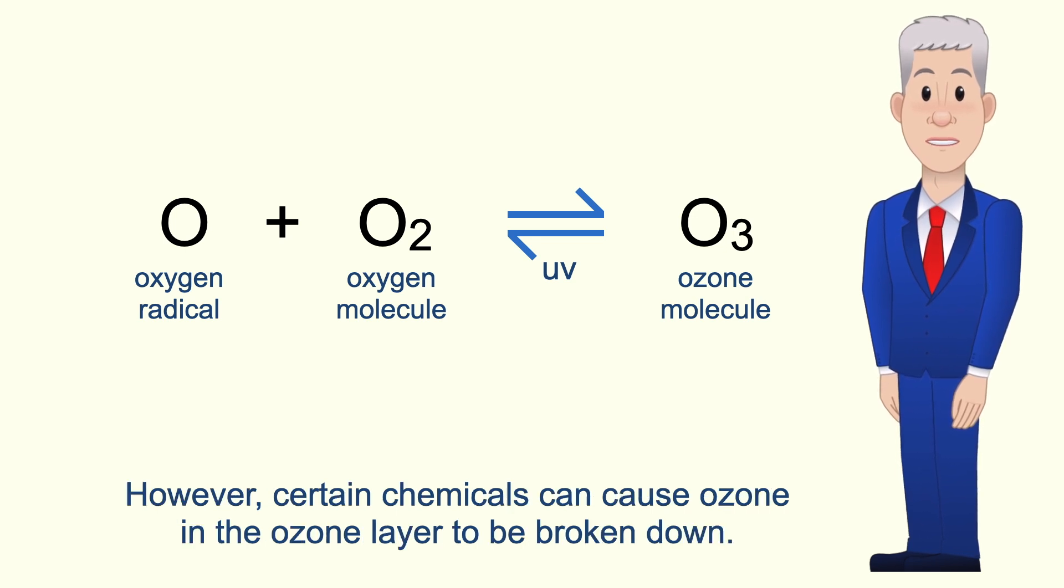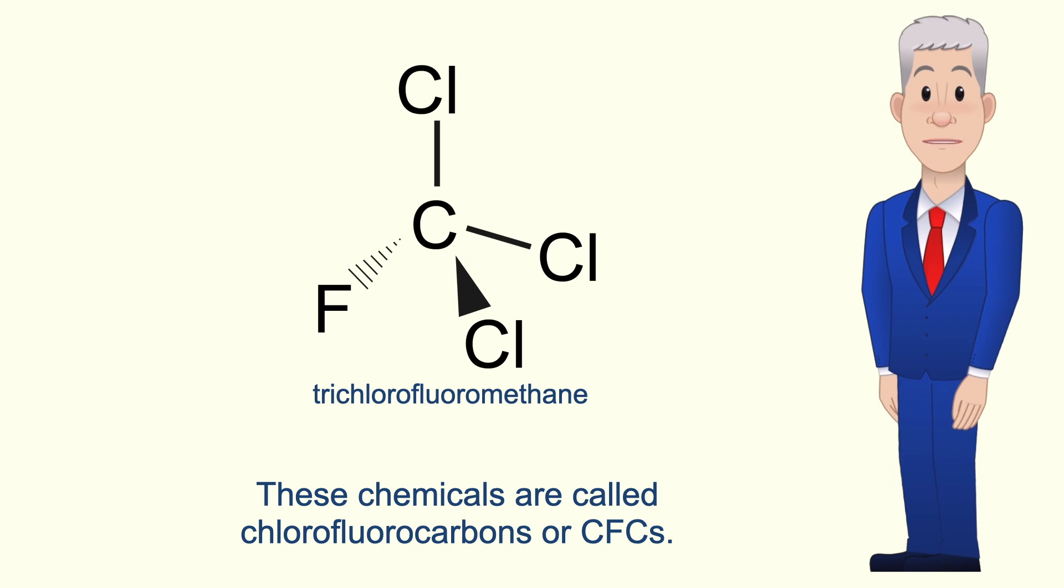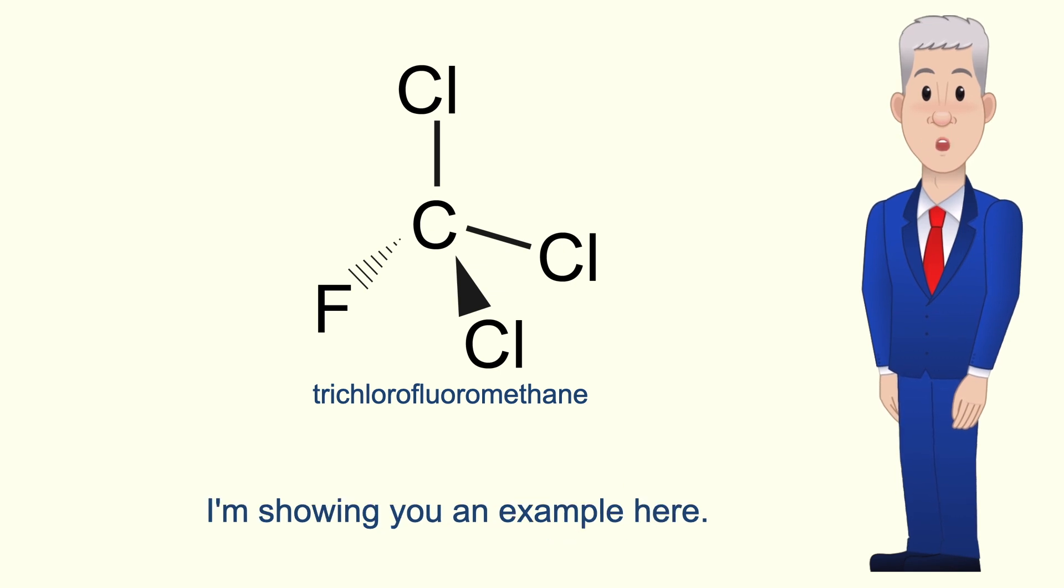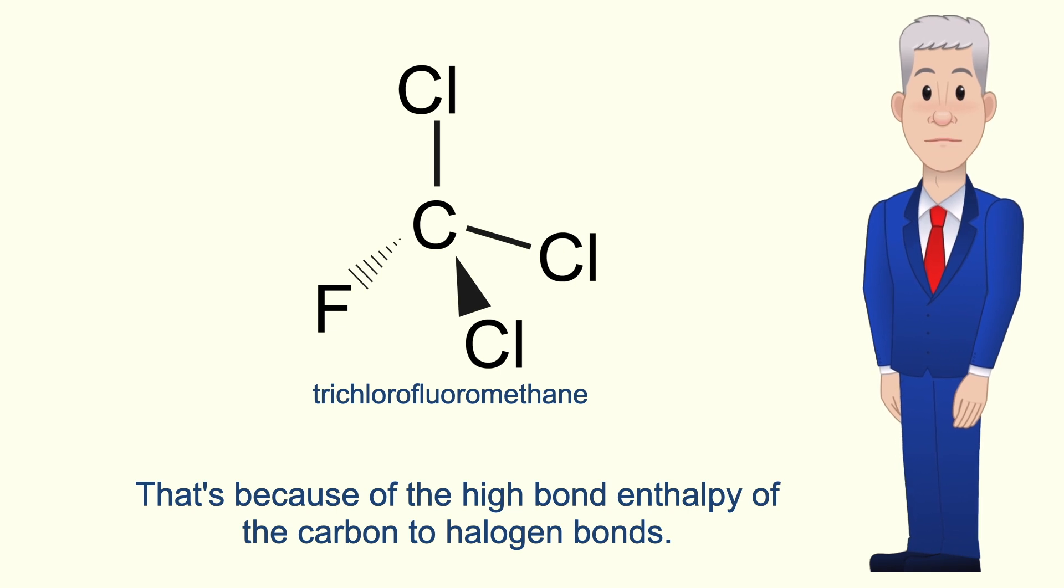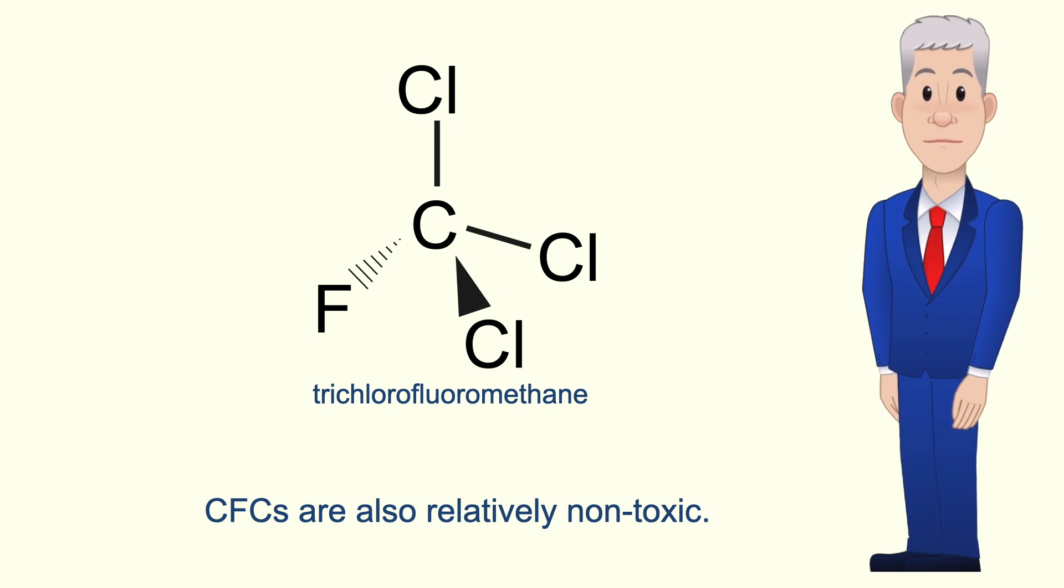However certain chemicals can cause ozone in the ozone layer to be broken down. These chemicals are called chlorofluorocarbons or CFCs and I'm showing an example here. CFCs are haloalkanes. CFCs are very stable molecules and that's because of the high bond enthalpy of the carbon to halogen bonds. CFCs are also relatively non-toxic.